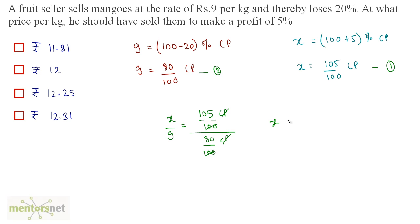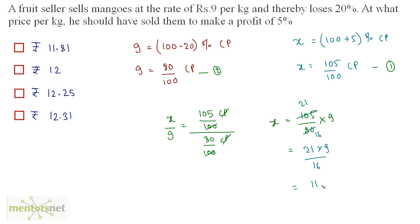What remains is X equals 105/80 times 9. Dividing 105 and 80 by 5 gives 21 and 16, so X equals 21 times 9 divided by 16, which equals approximately 11.81. So the answer is option A.